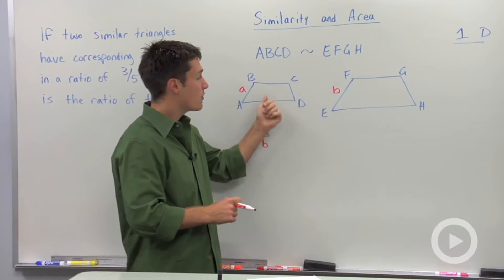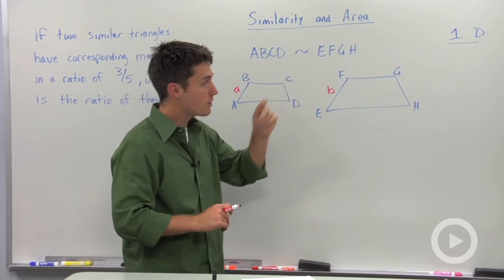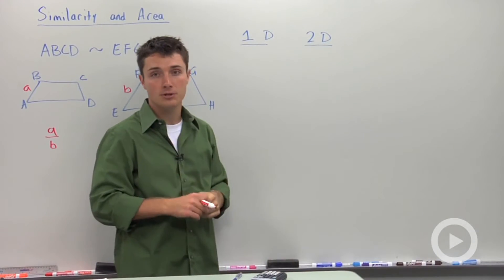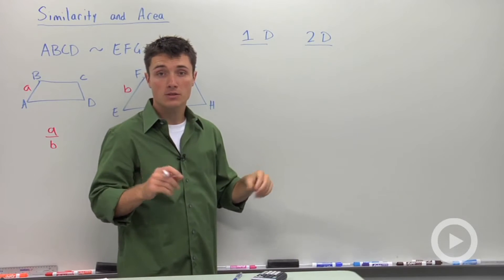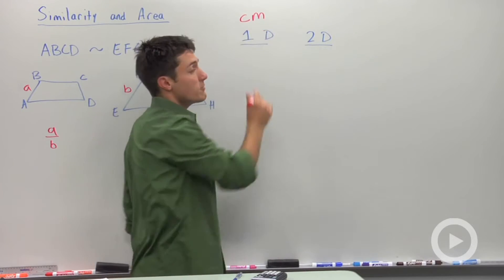Now what is the ratio of their areas going to be? Well to examine this, let's move over here and talk about dimensionality. Something that is one dimensional is just a length. So think of a distance. Distances, we would say, have units of centimeters, inches,